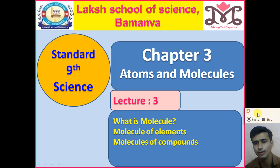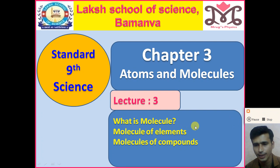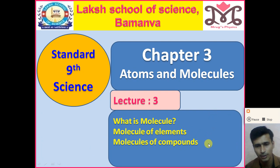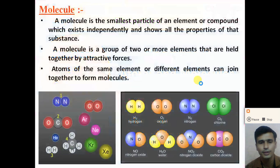In the previous video we also discussed that atoms cannot exist independently — atoms come together to form a molecule. Same atoms can combine, and atoms of different elements can also combine to form molecules. In this video we will discuss what a molecule is, how molecules are formed by atoms of the same element and atoms of different elements, molecules of elements, molecules of compounds, and what are the different types of ions present in molecules.